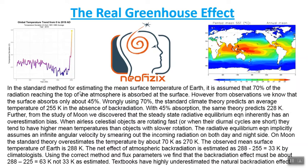In the standard method for estimating the mean surface temperature of Earth, it is assumed that 70% of the radiation reaching the top of the atmosphere is absorbed at the surface. However, from observations, we know that the surface absorbs only about 45% of the incoming radiation. Wrongly using 70%, the standard climate theory predicts an average temperature of 255 Kelvin in the absence of back radiation. With 45% absorption, the same theory predicts 228 Kelvin.